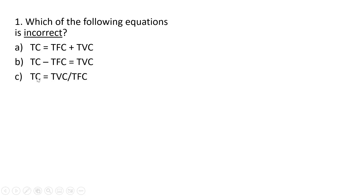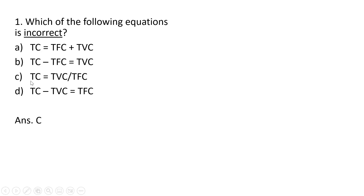Answer C is incorrect, so that's going to be the correct answer choice. Answer D is correct: total cost minus total variable cost will equal total fixed cost. So the incorrect equation here is C.